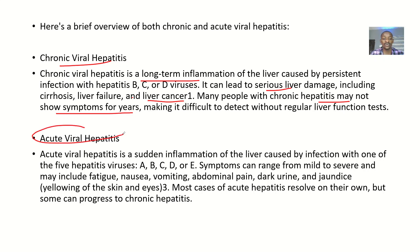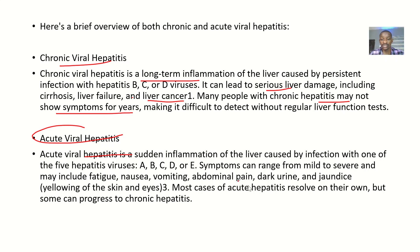The acute one is simply something that has been there for a short while. Acute viral hepatitis is a sudden inflammation of the liver caused by infections with one of the hepatitis viruses. All the different types — A, B, C, D, and E — can cause an acute infection. Symptoms range from mild to severe.